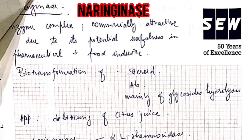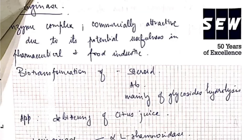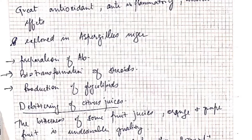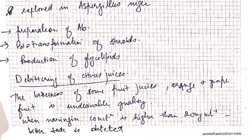Now let's look at the application of some enzymes. The first one is naringinase. It is an enzyme complex that is commercially attractive due to its potential usefulness in the pharmaceutical and food industry. It is used for biotransformation of steroids, antibodies, and mainly glycosidic hydrolysis. Naringinase exists in two forms: alpha and beta-D-glucosidase. It is produced by Aspergillus niger and is a great antioxidant with anti-inflammatory and anti-tumor effects. It is used for the preparation of antibodies, biotransformation of steroids, and production of glycolipids.